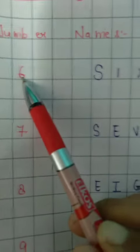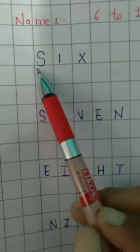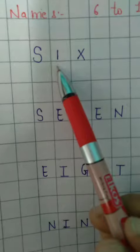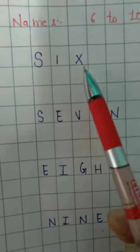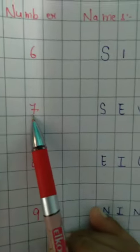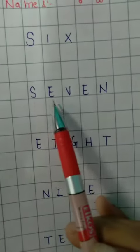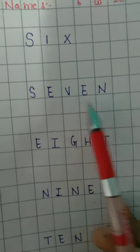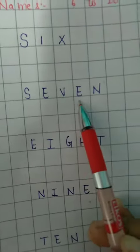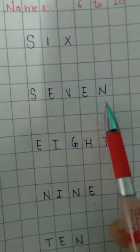Here is written the number 6, and the spelling of this is S-I-X. Next is 7: S-E-V-E-N.